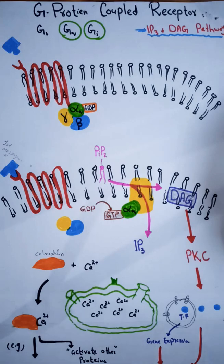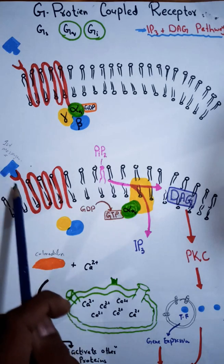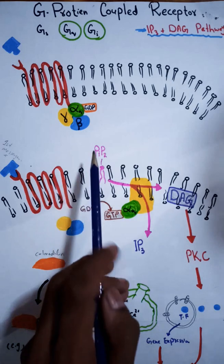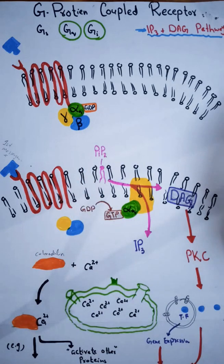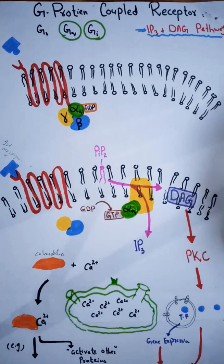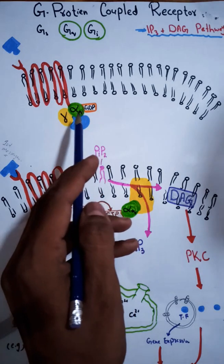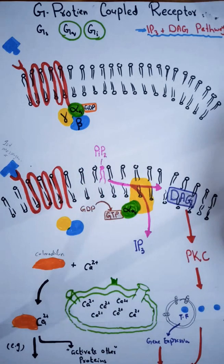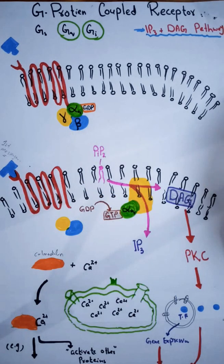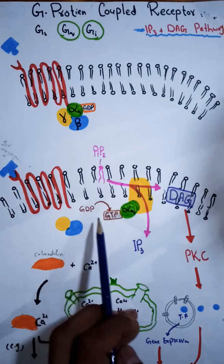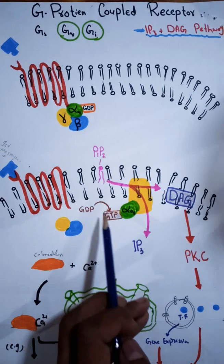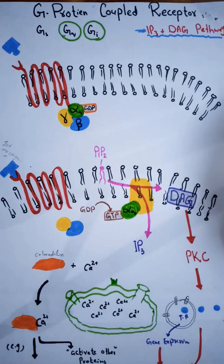When the ligand attaches with the binding site at the outer side of the receptor, the GDP molecule attached to the alpha subunit will be converted into GTP. At this conversion, all the subunits — alpha, beta, and gamma — will get separated from each other. GTP will now attach with the alpha subunit, and the beta and gamma subunits have separated.